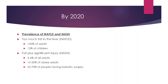The prevalence of NAFLD and NASH is that by 2020, there will be too much fat in the liver — greater than 30% of adults and 13% of children. Fat plus significant injury is NASH, and 3 to 4% of all adults and 15 to 20% of obese adults, and 25 to 70% of the people having bariatric surgery today have NASH.